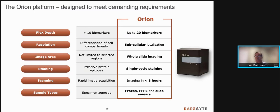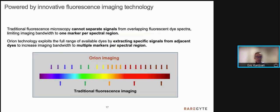We have designed Orion with these attributes in mind. The plex depth for Orion is up to 20 biomarkers. Its resolution is subcellular. It performs whole slide imaging. We use a single-cycle staining process and a single-step scanning process, which is less than three hours for the slide — and could be considerably less depending on the size of the tissue section. And finally, it is sample-type agnostic. What we will be showing here in this seminar is formalin-fixed paraffin-embedded tissues. Traditional fluorescence imaging uses a single dye in each spectral region of the light spectrum, which generally allows for five or six markers to be viewed at a time.